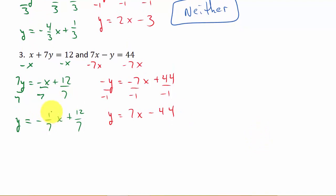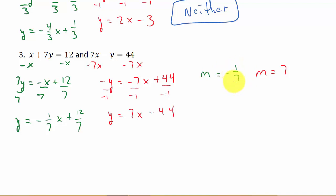The slope of the first line is negative 1 seventh, and the slope of the second line is 7. These are negative reciprocals of each other — if I flip negative 1 over 7, that gives me negative 7, and then changing the sign gives 7. So they're negative reciprocals, which means these lines are perpendicular.